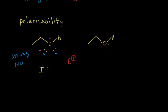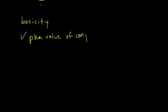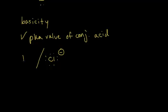Now let's look at basicity. When figuring out if something is a strong or weak base, one way to do that is to check the pKa value of the conjugate acid. For example, to determine if the chloride anion is a strong or weak base, we find its conjugate acid by adding a proton to get HCl. The pKa value for hydrochloric acid is approximately negative 7. The lower the pKa, the stronger the acid. HCl is a strong acid, and the stronger the acid, the weaker the conjugate base — so the chloride anion is a relatively weak base.